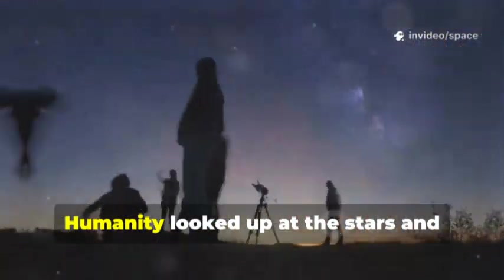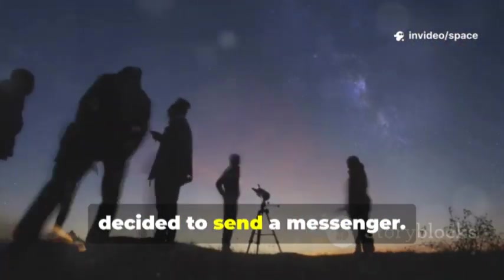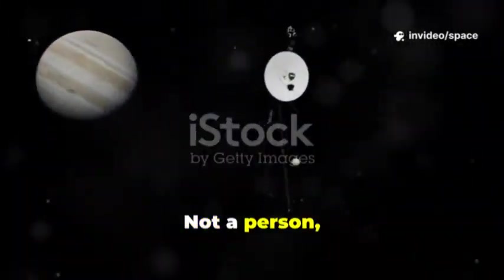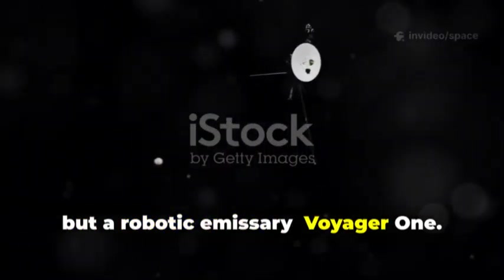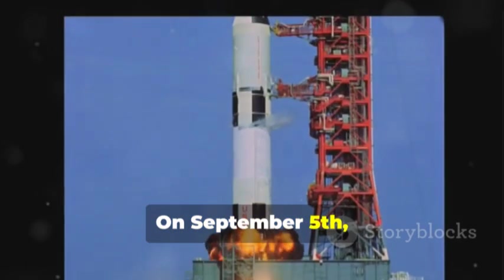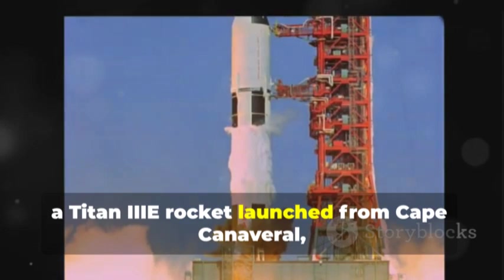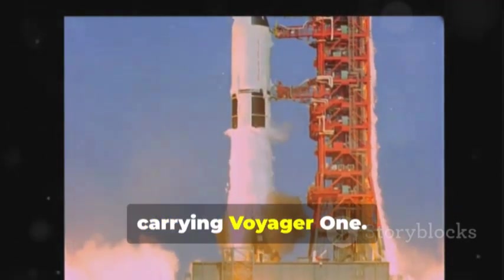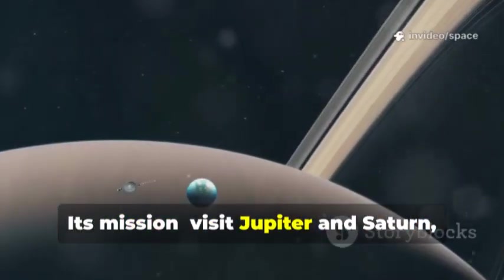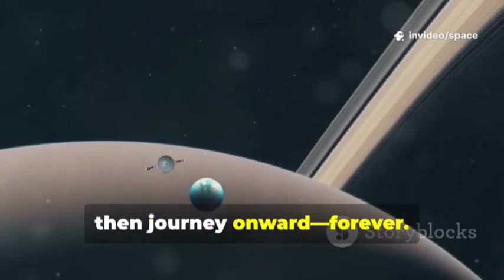It was 1977. Humanity looked up at the stars and decided to send a messenger. Not a person, but a robotic emissary, Voyager 1. On September 5th, a Titan-3E rocket launched from Cape Canaveral, carrying Voyager 1. Its mission: visit Jupiter and Saturn then journey onward, forever.